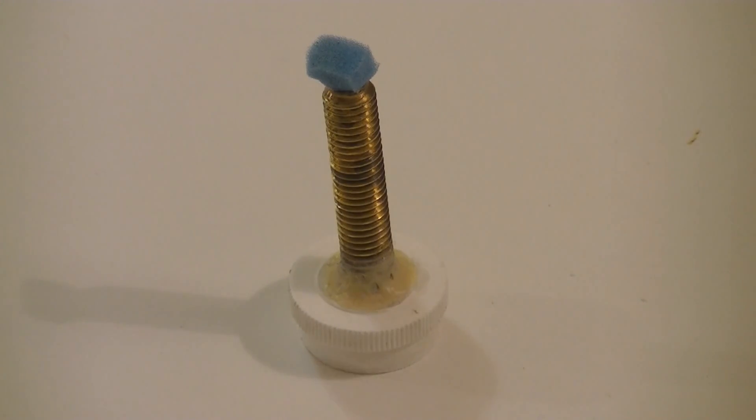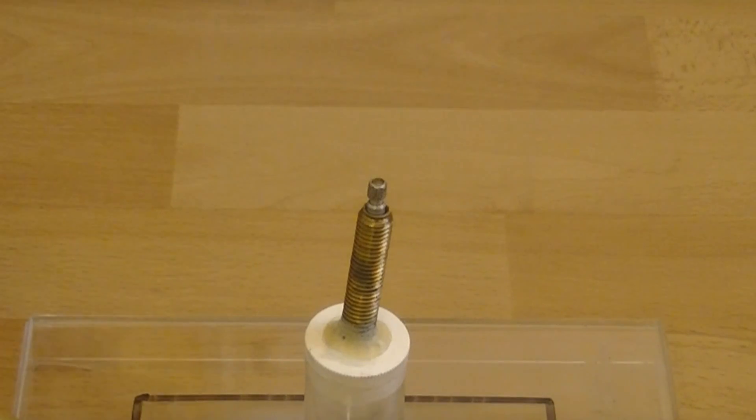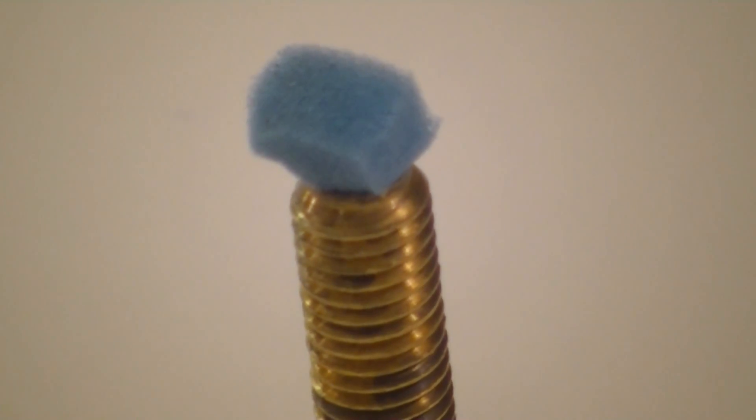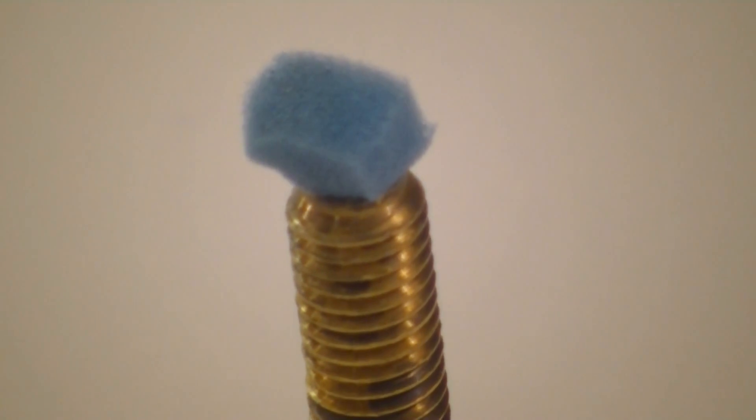This step is crucial because the filter regulates the pressure, which isn't constant because of the bubbles, and helps to avoid the systematic flashback each time the flame is lighted up or put off. It's also for this reason that the filter will quickly become damaged and you'll need to change it very, very often.